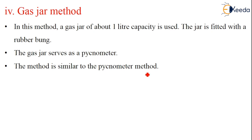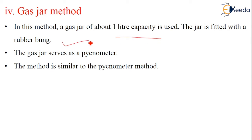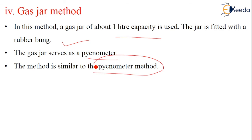Coming to the gas jar method. In this method, a gas jar of about 1 litre capacity is used. The gas jar is fitted with a rubber band. The gas jar serves as a pycnometer, and this method is also very similar to the pycnometer method. Thank you.